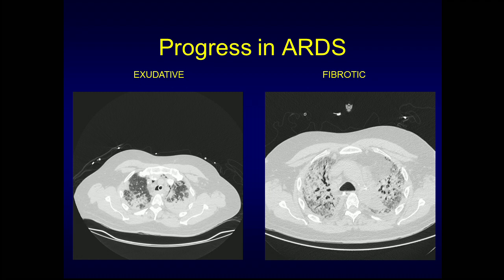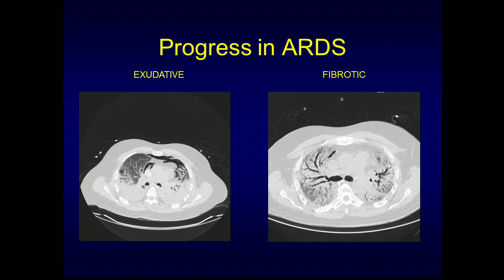In the exudative phase you see bits of ground glass and patchy consolidation, which looks much the same in the proliferative phase but there's more of it. By the time we get to the fibrotic phase we can clearly see these very distended, dilated, tortuous, saccular airways. As we go through the chest on these two patients — the same patient later in the course of their disease — we get dense consolidation that evolves to much more patchy fibrotic reticular change with abnormal tractionally dilated airways that are not tapering right out to the edge.